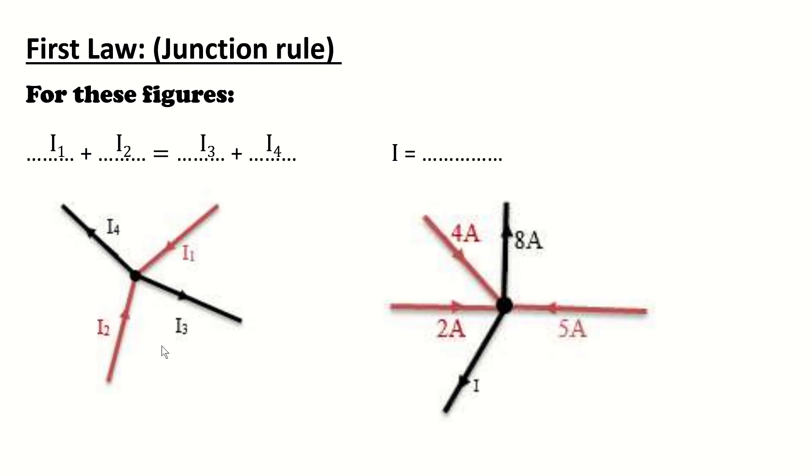In the second figure, I equals the summation of all these currents. We can find this by adding 5 plus 4 plus 2 minus 8, the only one that exits this node or junction. So, I equals 3A.